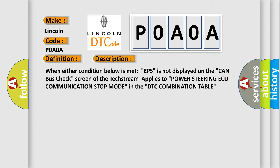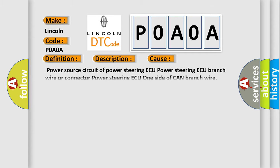This diagnostic error occurs most often in these cases: Power source circuit of power steering, power steering branch wire or connector, power steering one side of CAN branch wire.